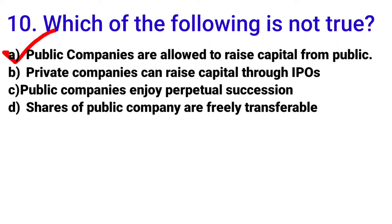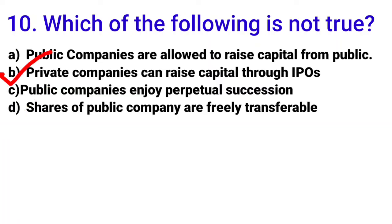Option A — public companies raise public capital — is true. Option C — perpetual succession — is true for public companies since there are many shareholders and the business continues even if one owner exits. Option D — shares of public companies are freely transferable — is also true. Option B states that private companies raise capital through IPOs — IPO means Initial Public Offering, which is a public company mechanism. Private companies cannot issue IPOs, so option B is false. The answer is B.